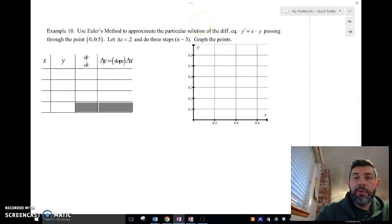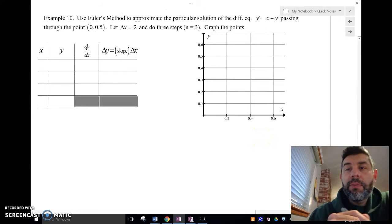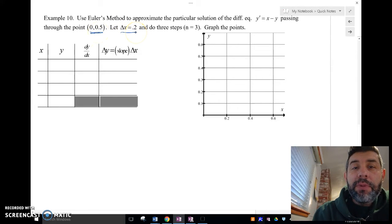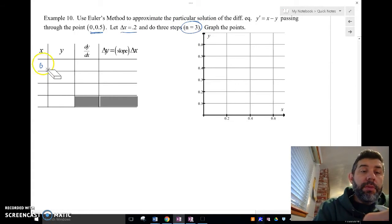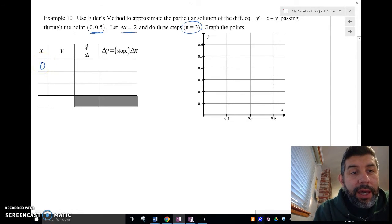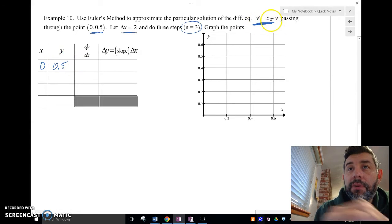So let's take a look at another one here. So this time we're doing y prime equals x minus y. We're going to start at 0 and 0.5. And we're going to let our delta x be 0.2. We're going to do three steps. They're going to usually say n equals 3. So let's start with 0. And then we're going to go ahead and y is going to be 0.5.